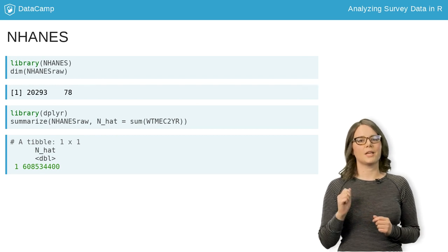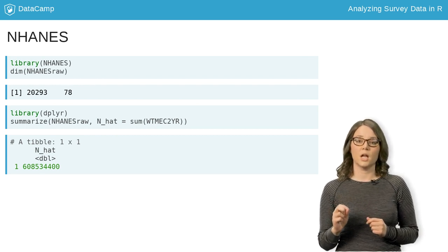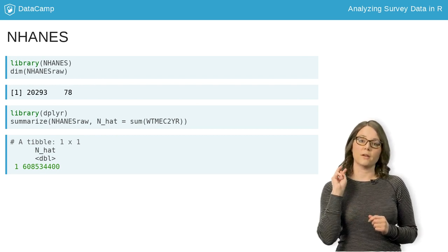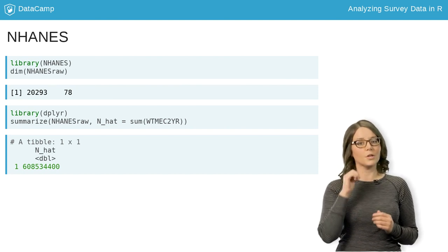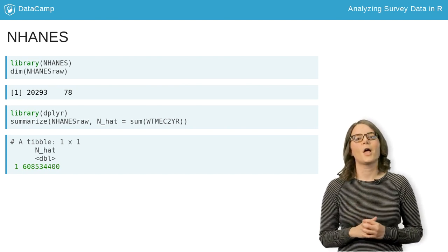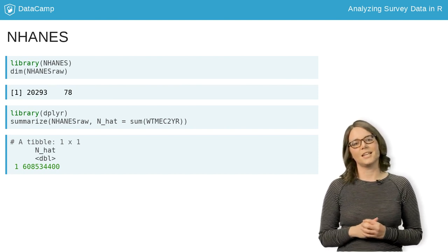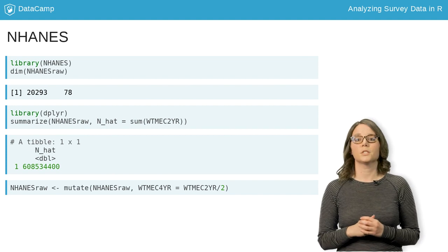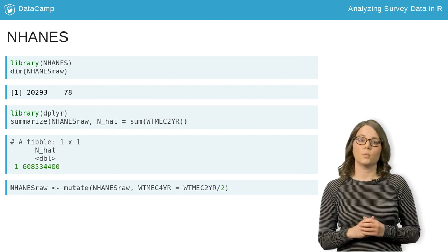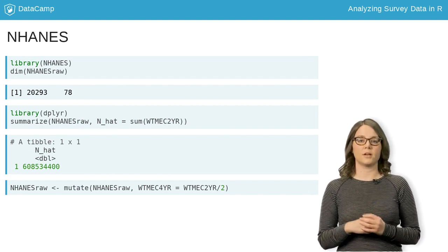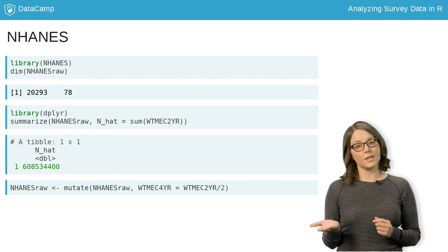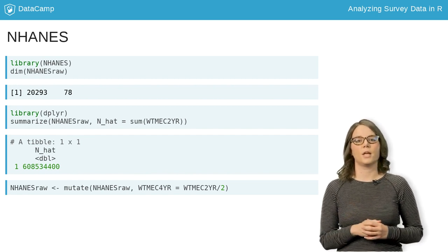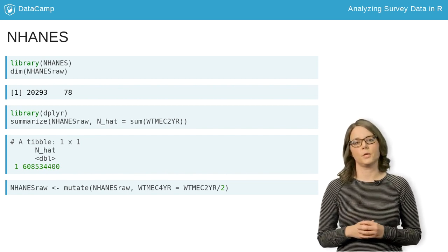That is because these weights were constructed assuming you have two years of data. Since we have four years of data, we need to divide each weight by two. To do that, we use the mutate function to create a new column, weight-mec-4-year, where each value is half the value in weight-mec-2-year.